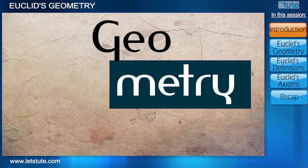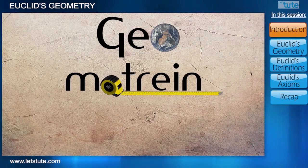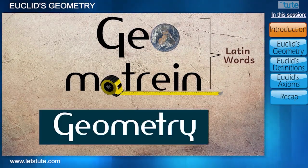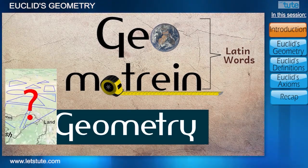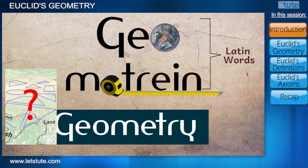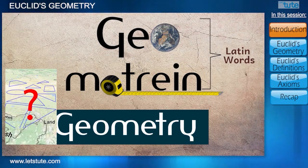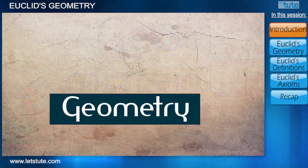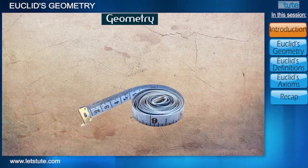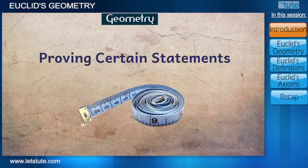which we call geometry. Where 'geo' means earth and 'metarin' means to measure. But does geometry mean only measuring the land? No, it's far more beyond that as we all know now. Geometry isn't just about measuring things — it is also about proving certain statements.